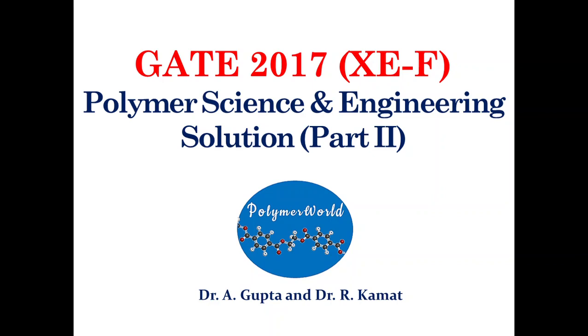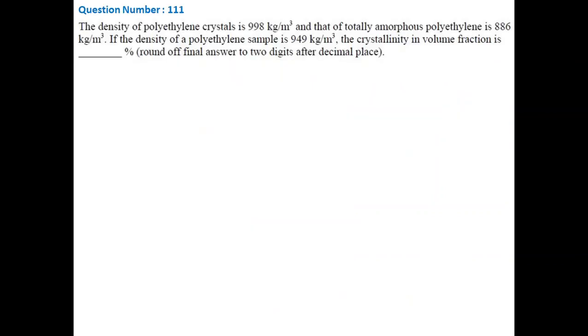Let's start this part with question 111. In this question, densities of polymer amorphous and crystalline phase are given. We need to find percentage crystallinity of the polymer. If you remember this equation then it is very simple. Just put the values in the equation and you can find the percentage crystallinity. In case if you do not remember this formula, then following logic can be used to derive the equation.